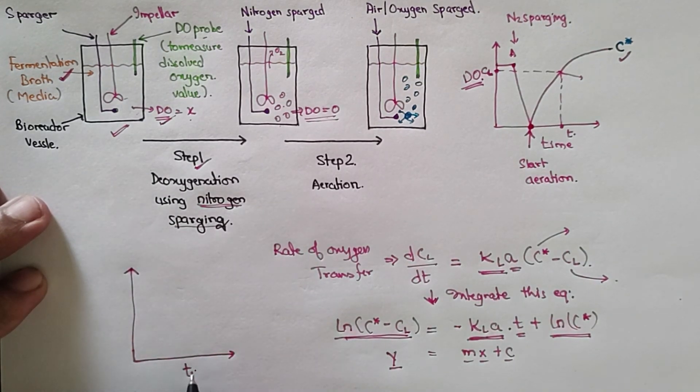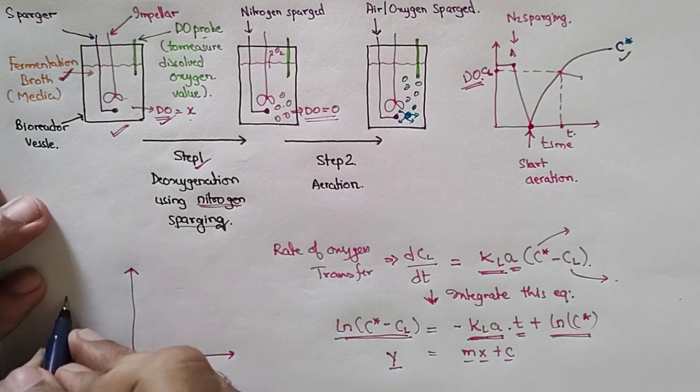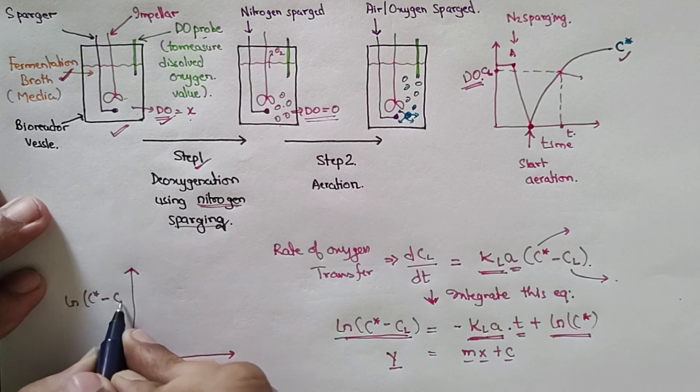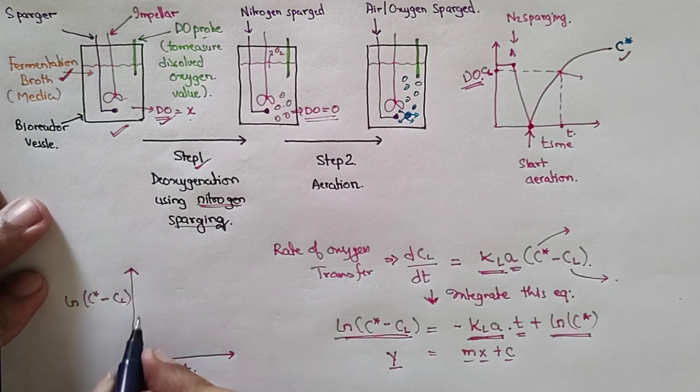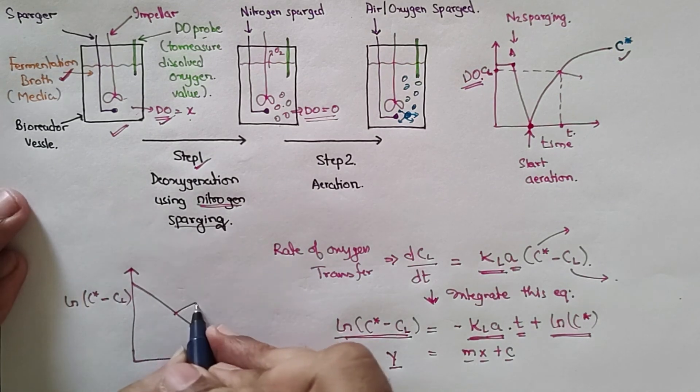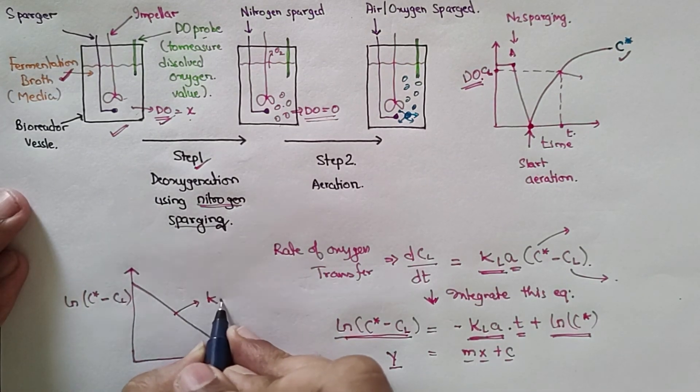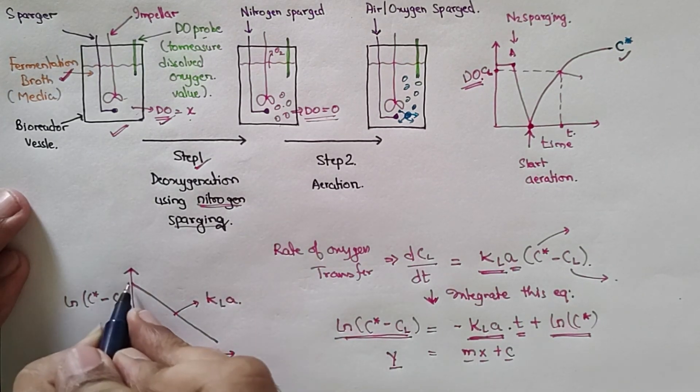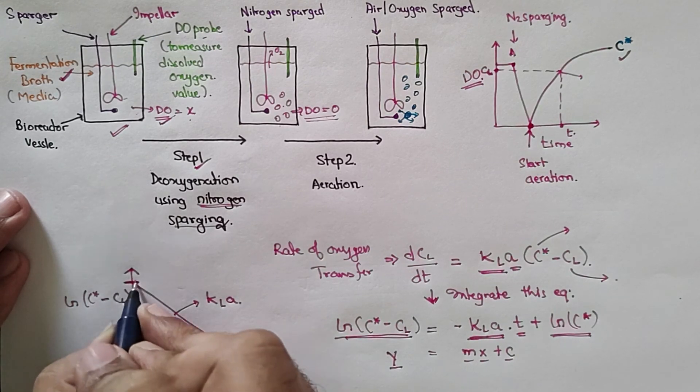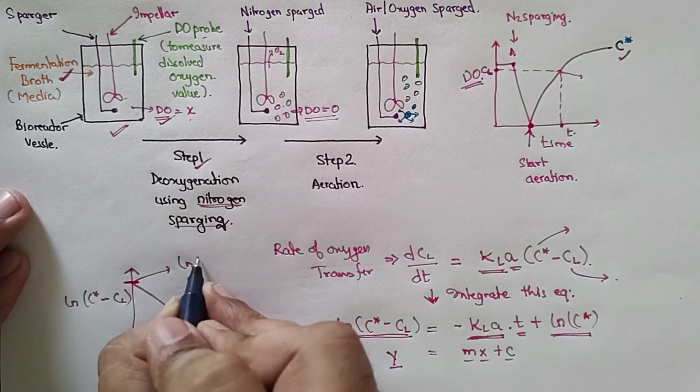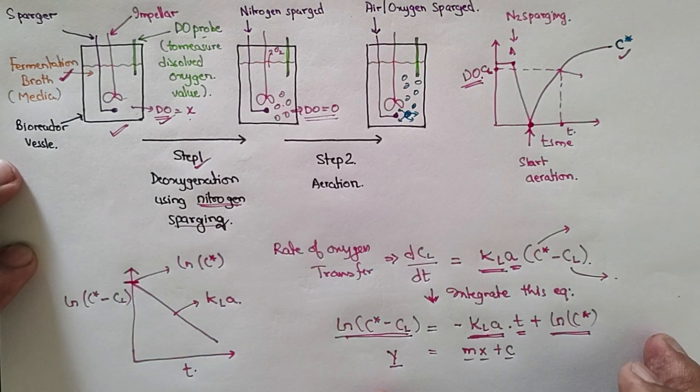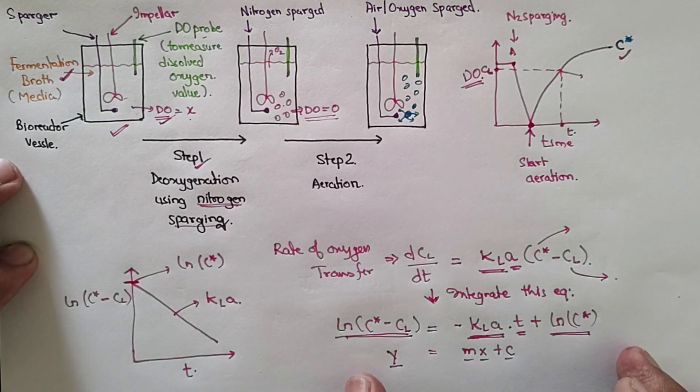time versus ln(C* - CL), how will it look like? It will look like this. The slope will be represented by your KLA, and this point is your ln(C*). So I hope this method is clear to you all.